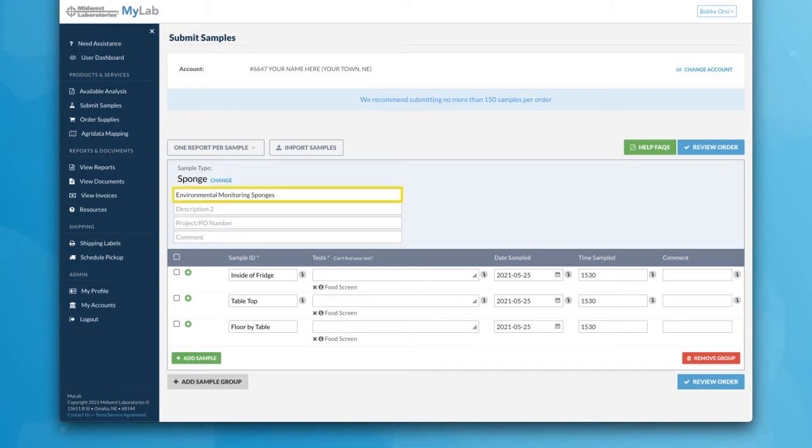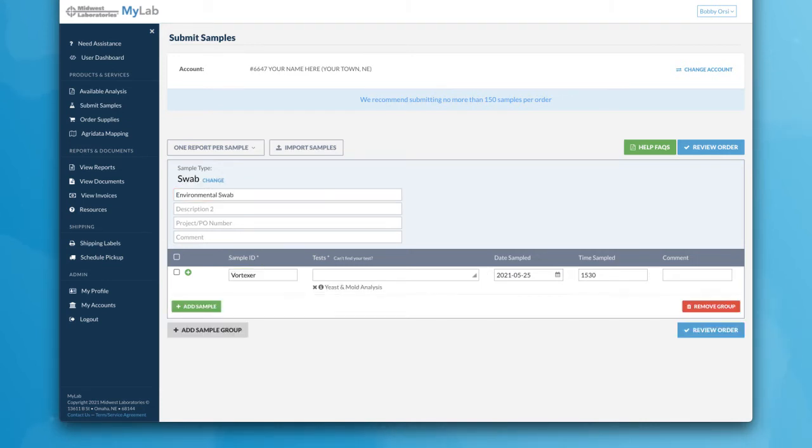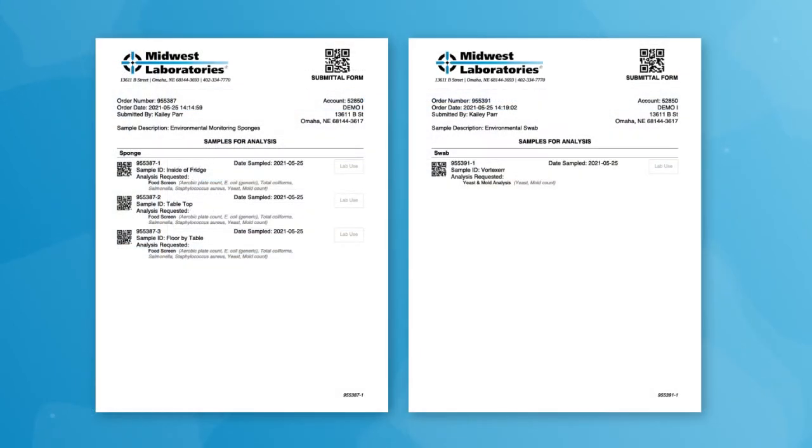Write in your description and label the sample IDs the same way you did on each bag. Repeat this for your swab samples as well. Click on review order and submit to get paperwork to print off and put in the box with your samples.